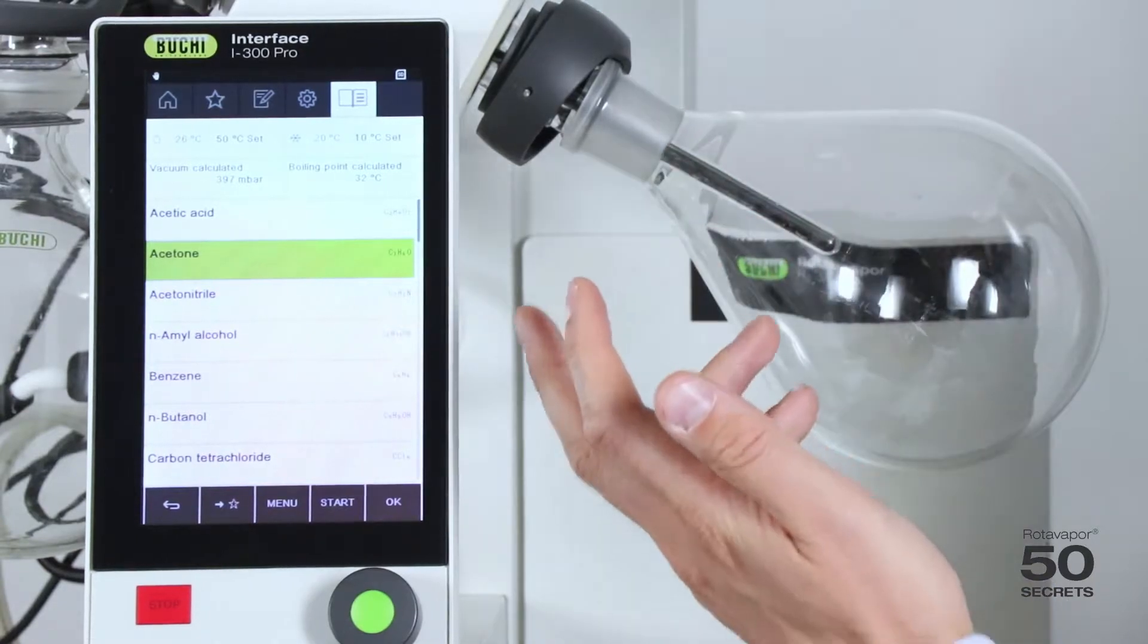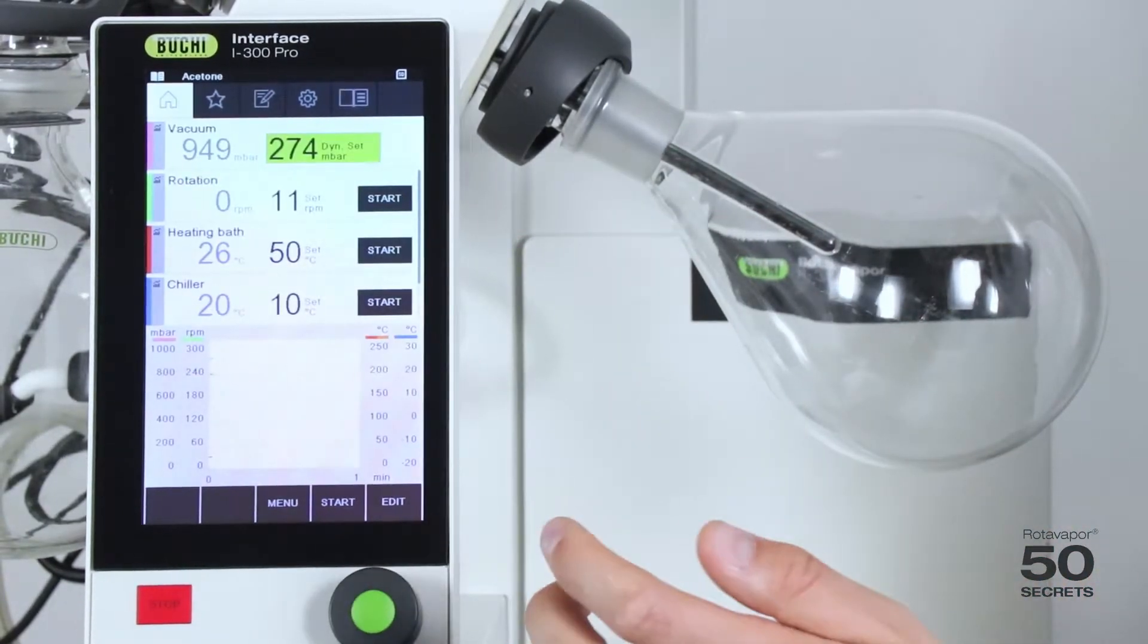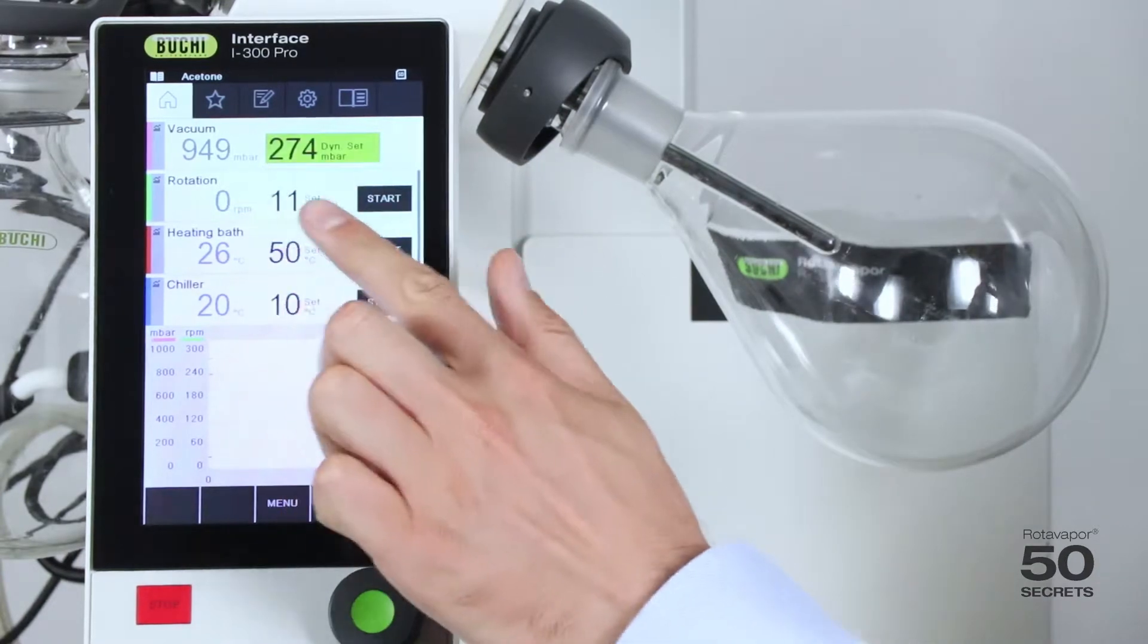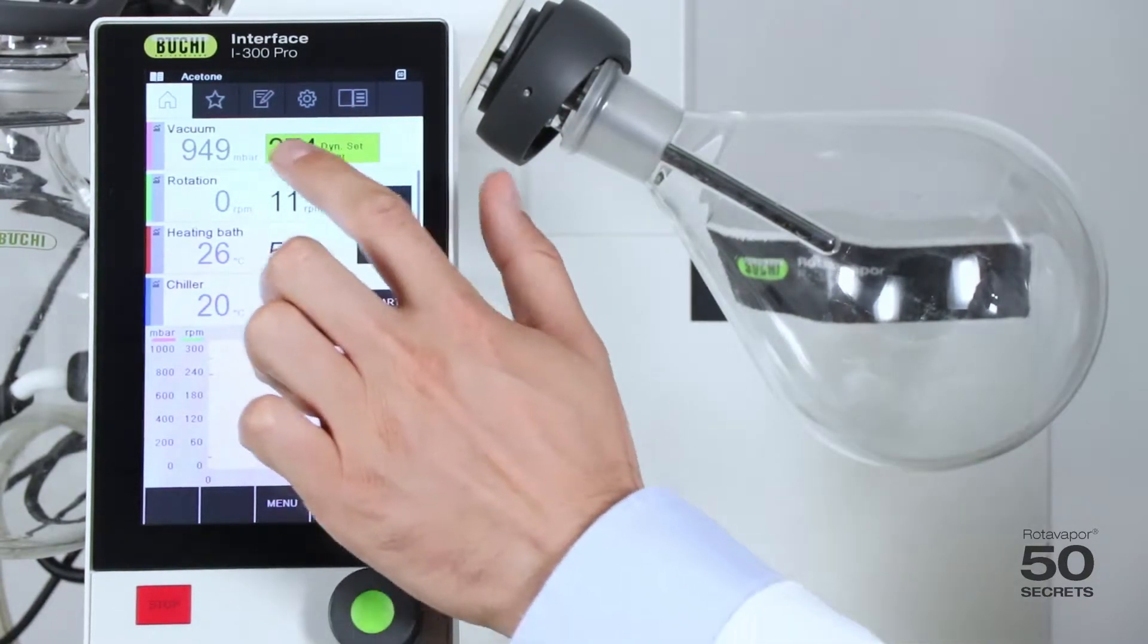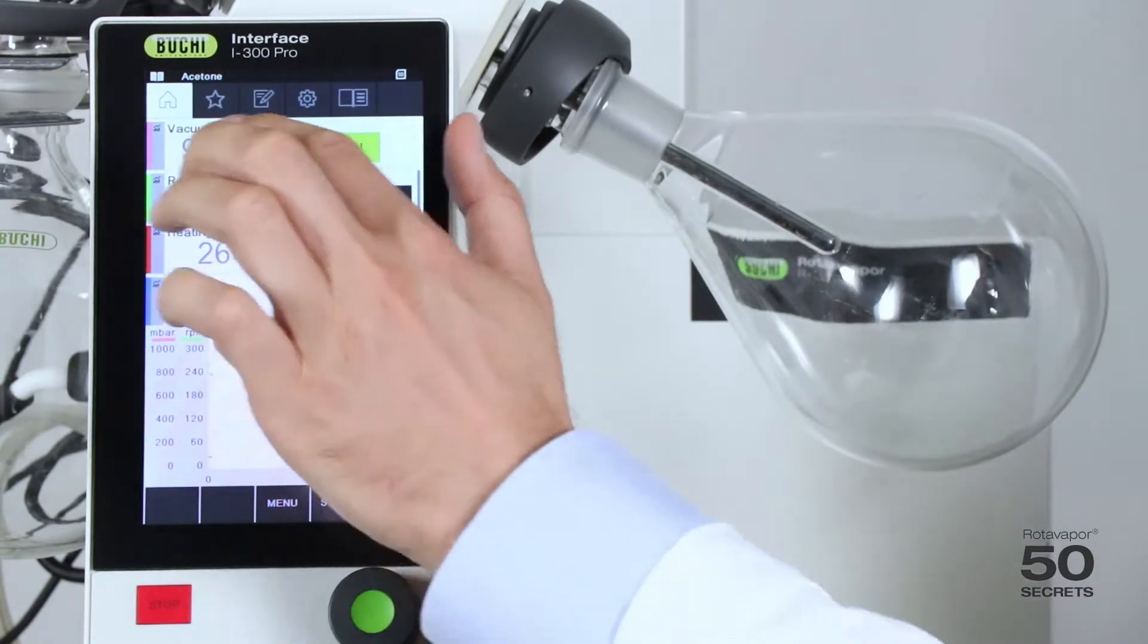Once I am happy with all these numbers I can just press OK. And now it shows over here that we have a dynamically set vacuum.